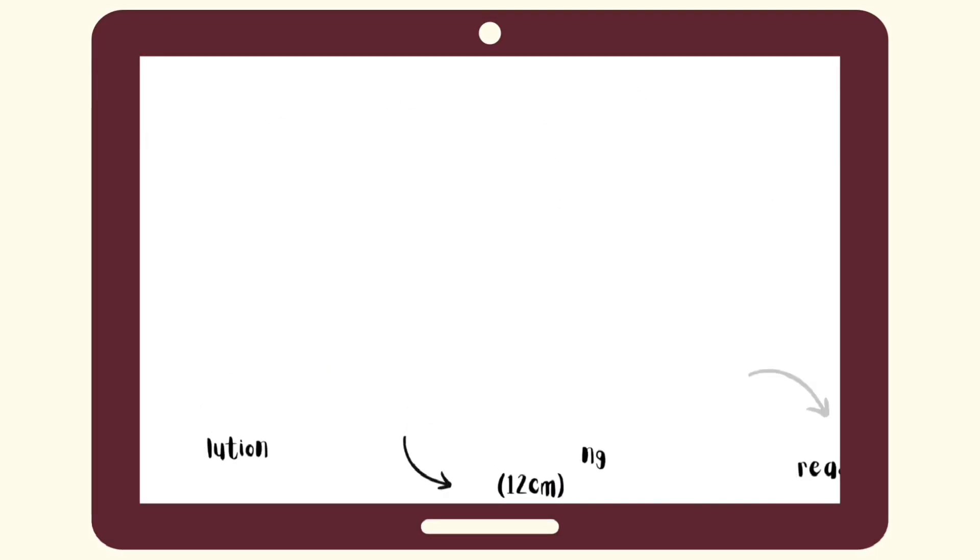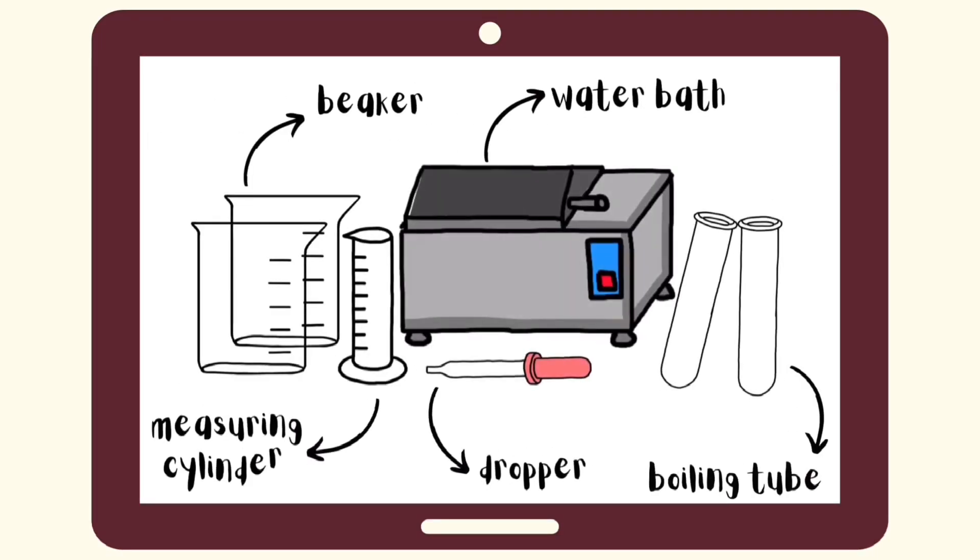Meanwhile, the apparatus needed for this experiment are: beaker, test tube, Bunsen burner, dropper, and measuring cylinder.